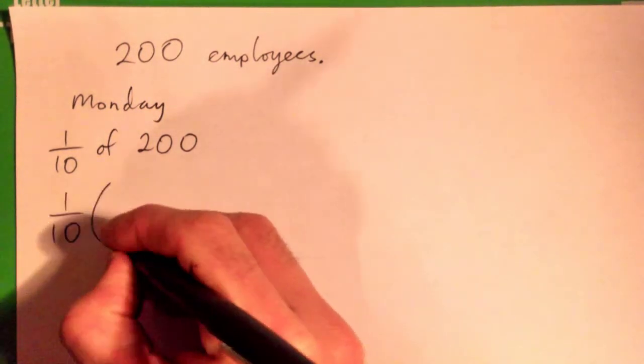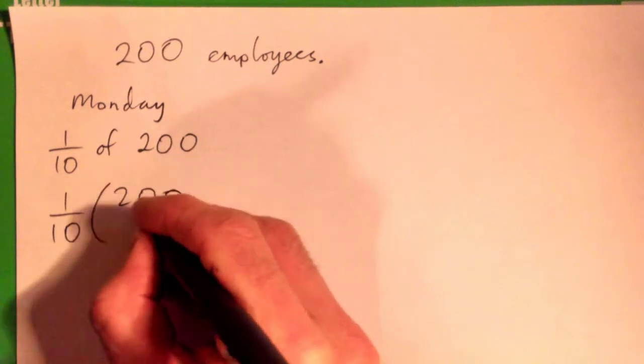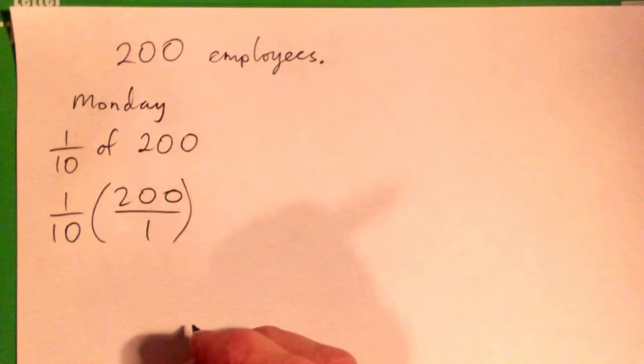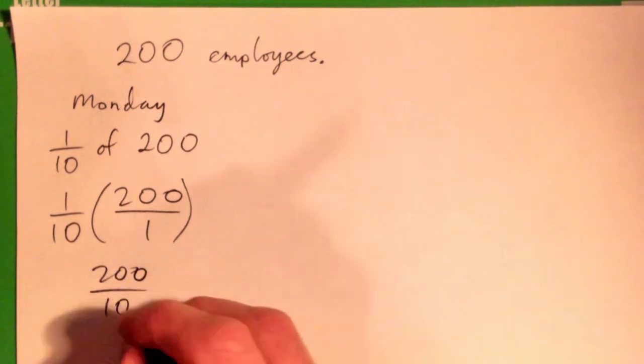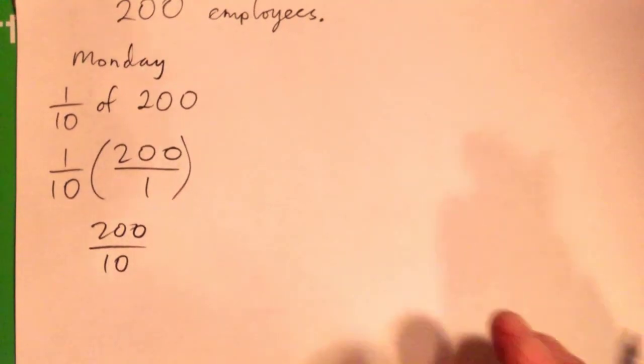Yeah, so it's one-tenth times—200 is 200 over 1. I'll just go through the steps for fun. That's 200 over 10, and 200 over 10 is? Right, lovely.